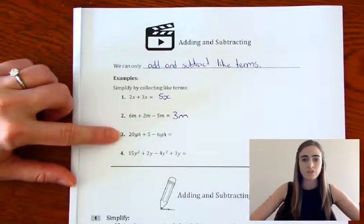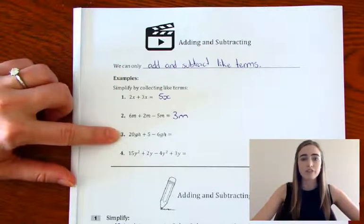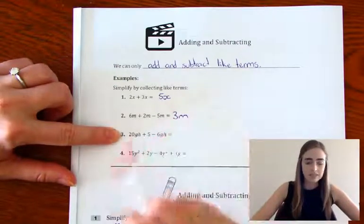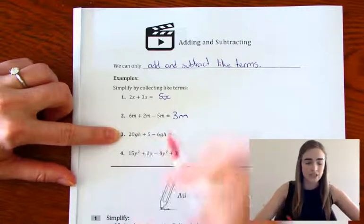This next one, we've got 20gh plus 5 minus 6gh. So the 5 isn't a like term, because it doesn't have that gh in there.